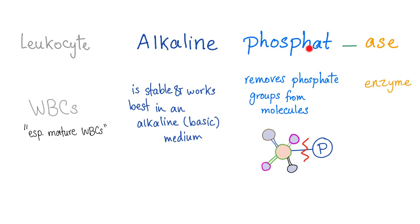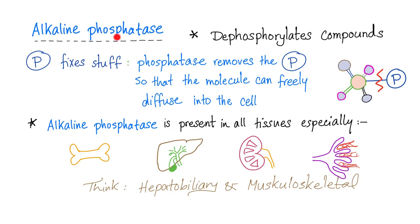This enzyme, alkaline phosphatase, is present in almost every single tissue. But today's topic is specifically the one inside the white blood cells, particularly the mature white blood cells. As you know, phosphate fixes stuff, so alkaline phosphatase will remove the phosphate so that the molecule can freely move into the cell. Alkaline phosphatase is found in many tissues, including the white blood cells.